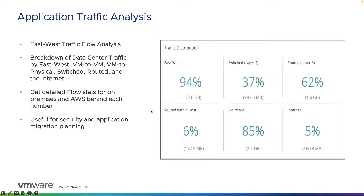We also see an application traffic analysis within the micro-segmentation planner. This allows us to see how much traffic is east-west in our data center, how much is switched at layer two, and how much is routed at layer three through our underlay. We can also see how much traffic is routed within the same host, VM to VM, or internet communication — giving us a clear picture of east-west lateral movement, which is key to implementing micro-segmentation and zero-trust.